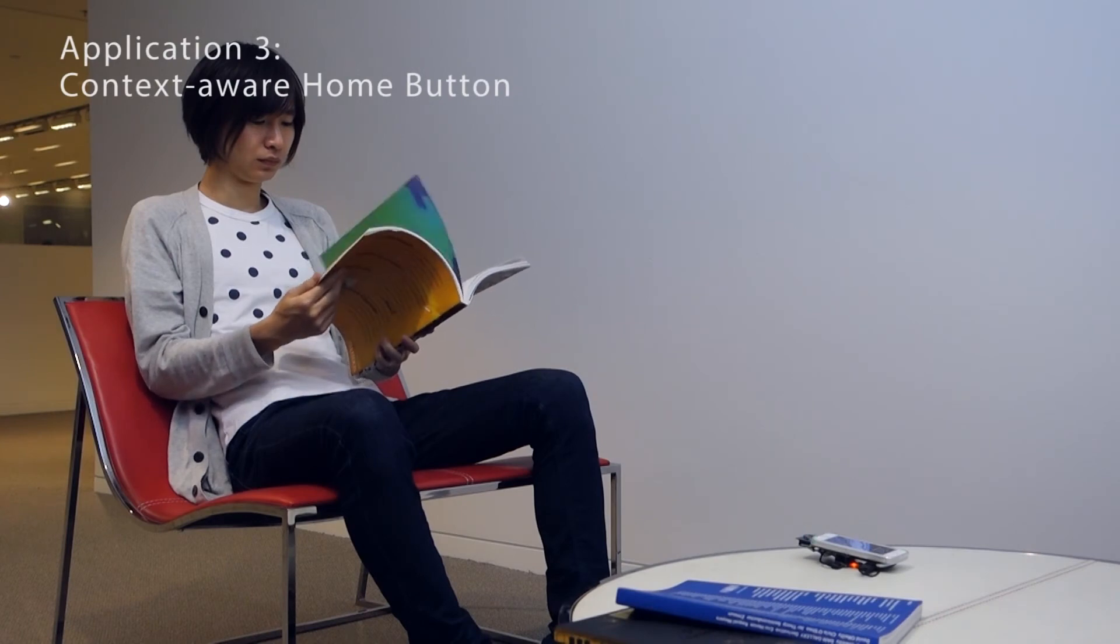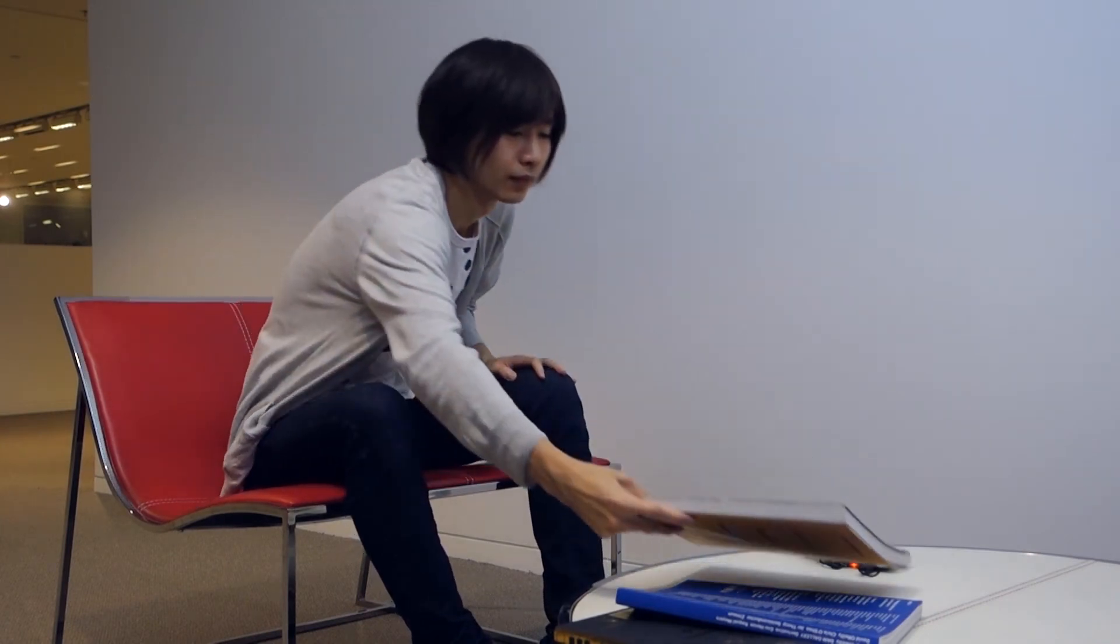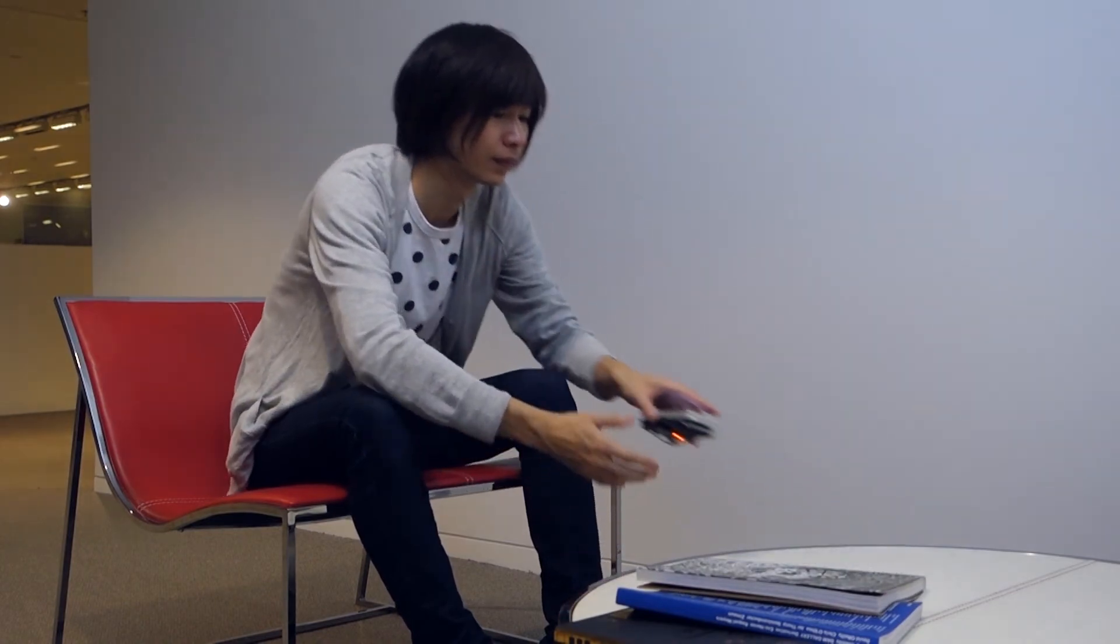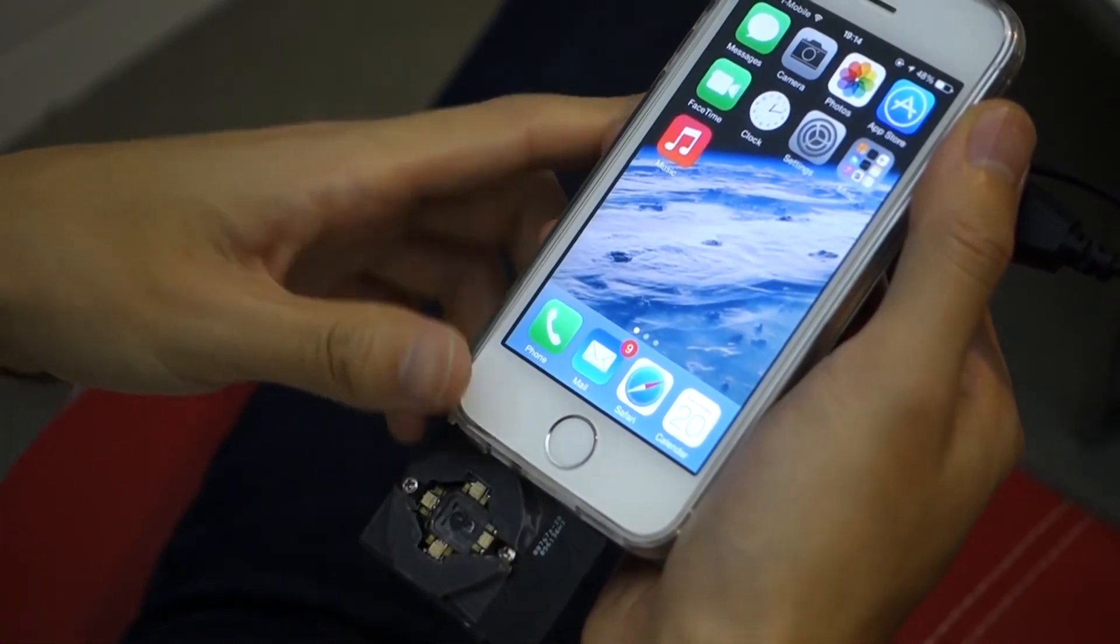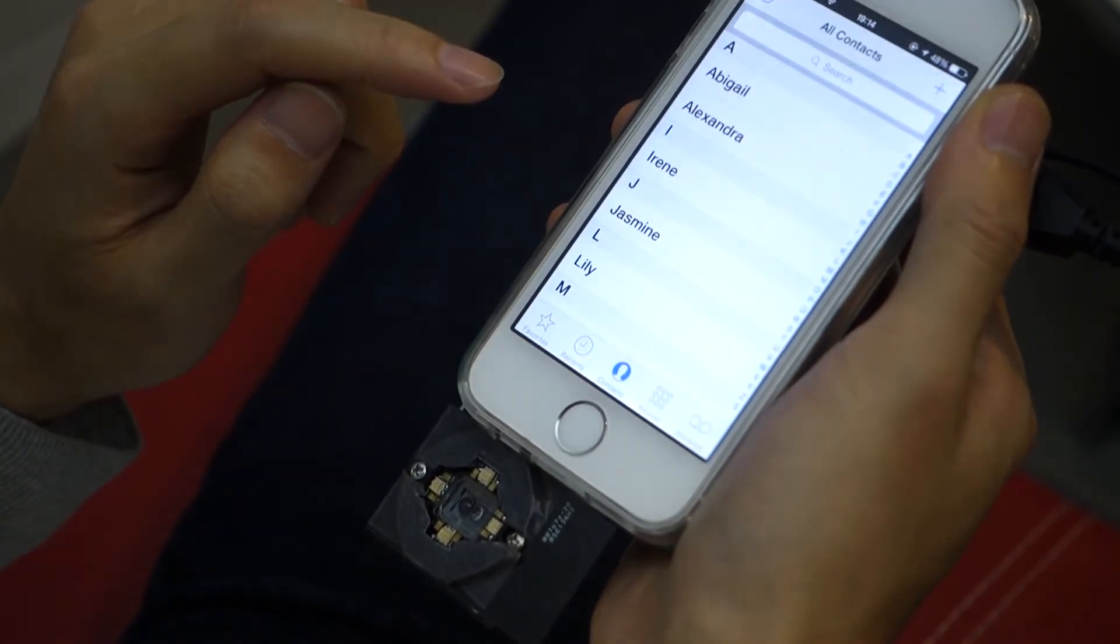By embedding SPECTRANS sensor in a smartphone, we can create a smart home button that changes behavior based on the user context. When a user is controlling a phone with bare hands, it shows a normal home screen and address book.